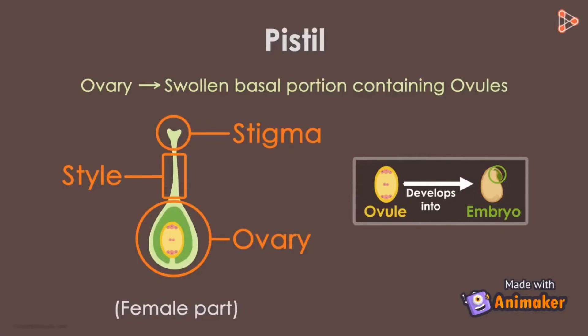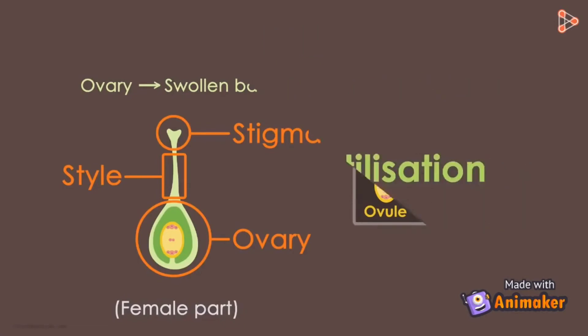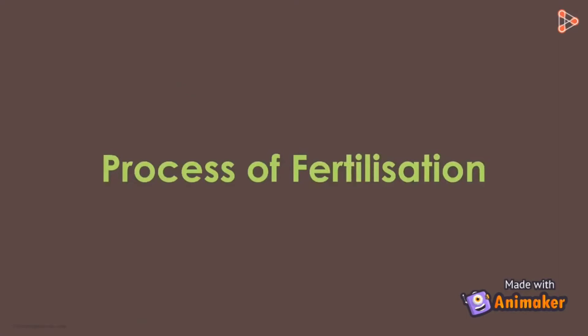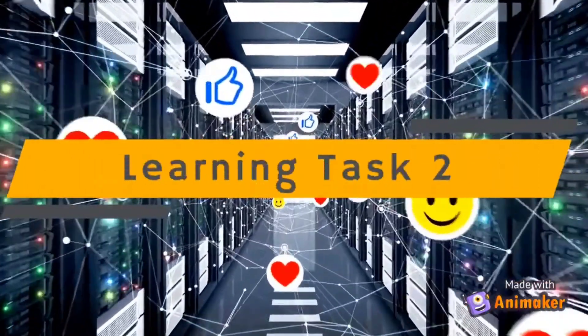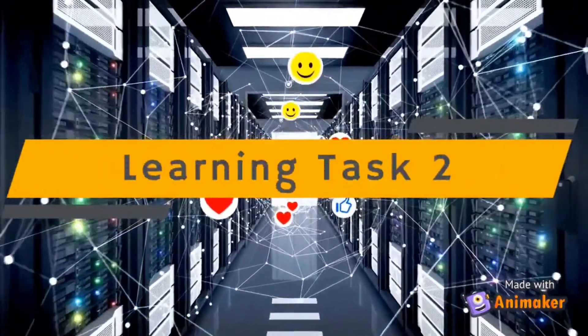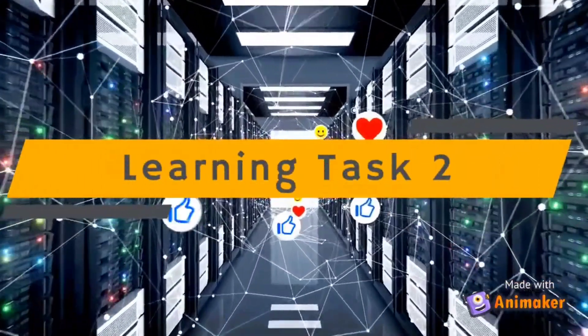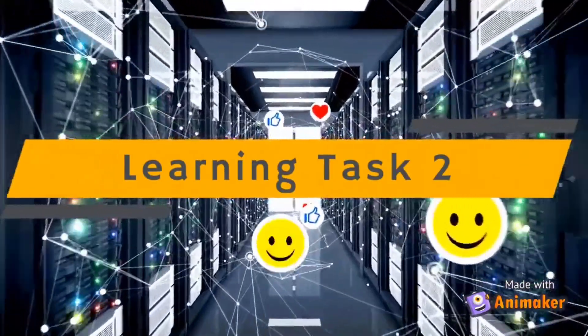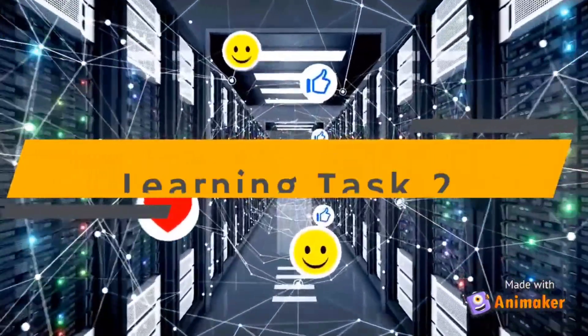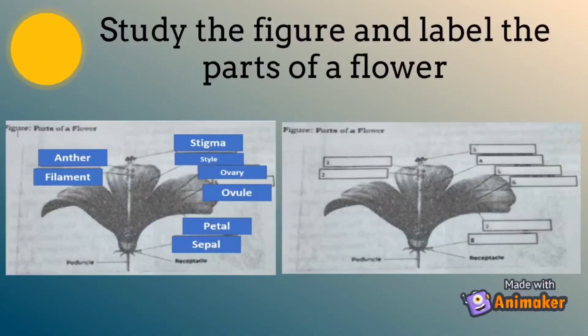Let us get into more details of the process of fertilization in the next video. Let's do Learning Task Number 2: study the figure and label the parts of a flower.